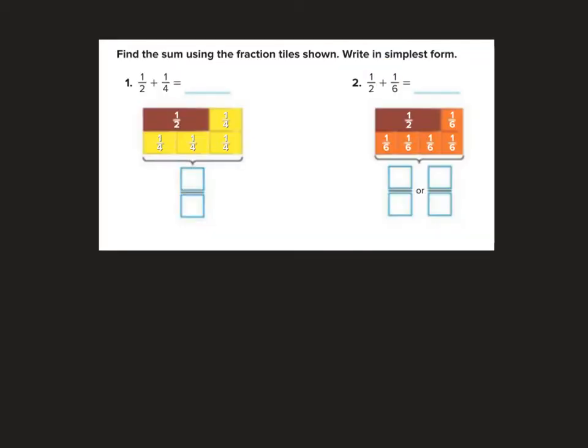All right, so this is from the homework, so if you flip forward two pages or so you should see these on the bottom of the homework page. Let's get started. Find the sum, which means we're going to add using the fraction tile shown, write in simplest form. Okay, so I see I'm adding one half to one fourth. We did this one already but I guess we're going to do it again. So I can change out the one half for two one fourth tiles and then I'm going to get an answer of three fourths.